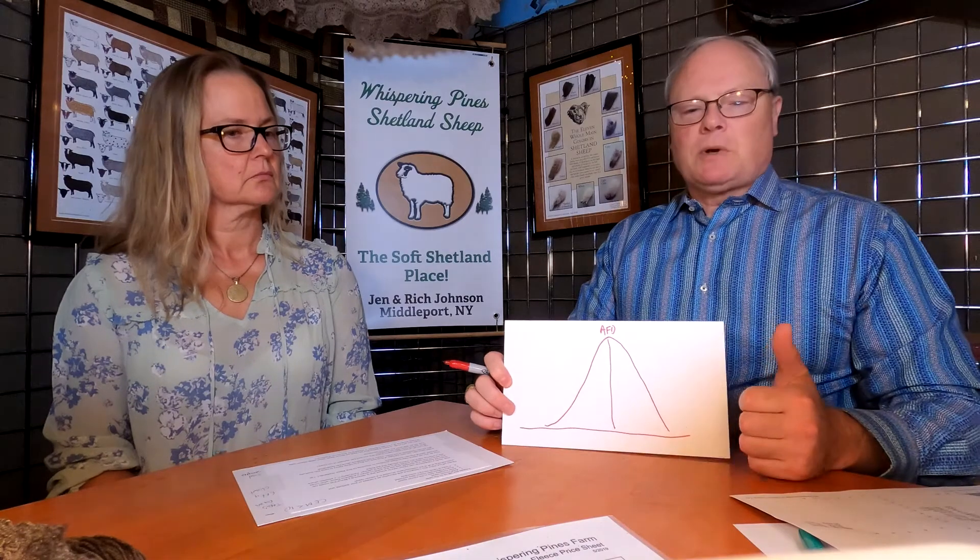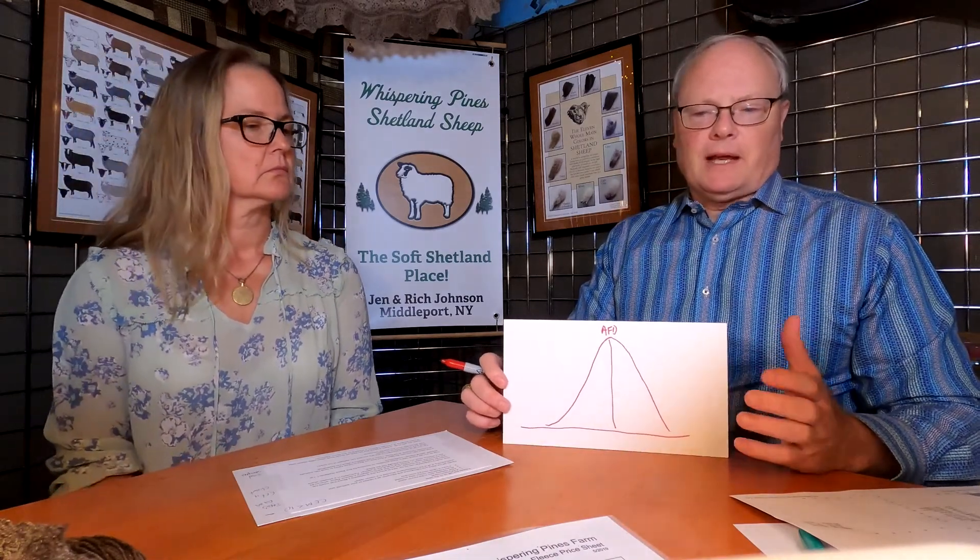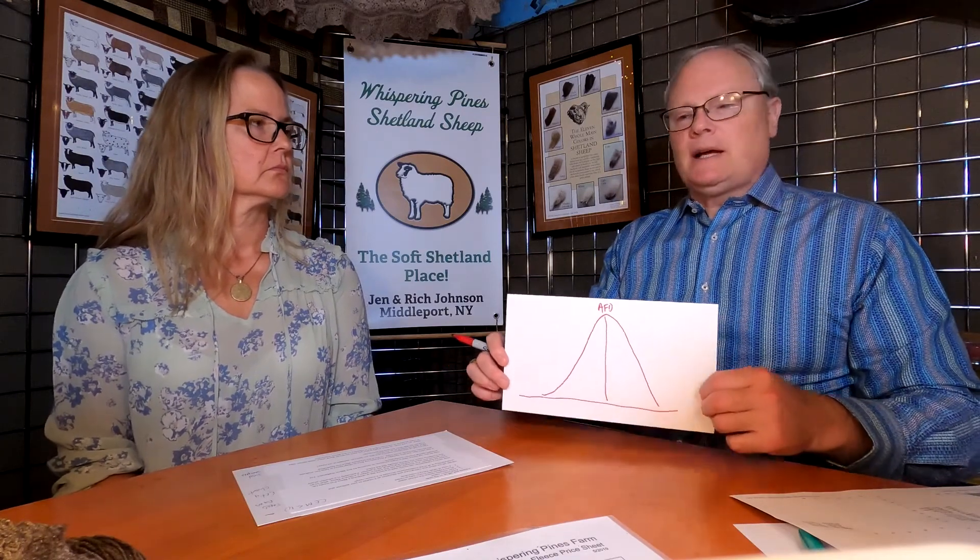You're going to get raw statistics, which I really like, but you're also going to get a report that shows a histogram of all the different readings they took on the sample. What you're looking for as a hand spinner is the average — obviously — and that's referred to as the AFD. You've got an average fiber diameter, some that are very fine, some that are coarse. First of all, look for your average or AFD. That tells you, on average, how fine your fibers are — but that's not the whole story.